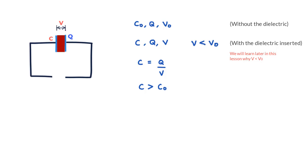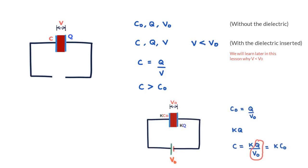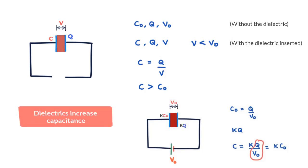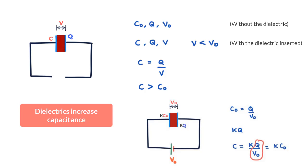In the first case, for a given potential difference V₀, we were able to load up more charge on the plates. In the second case, for a given charge Q, we could maintain the charge on the capacitor at a lower potential difference V. So with dielectrics we can increase the capacitance of capacitors and therefore the energy stored.